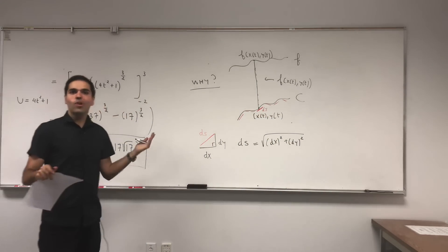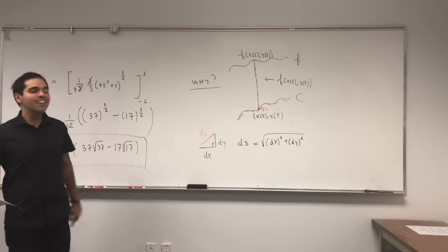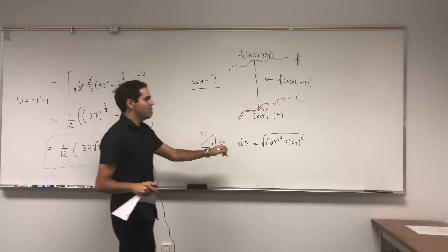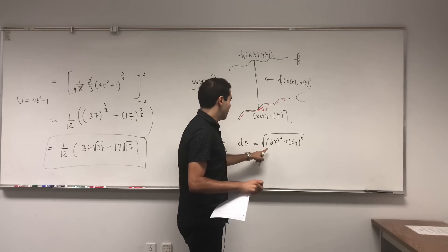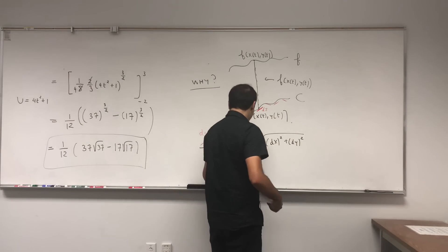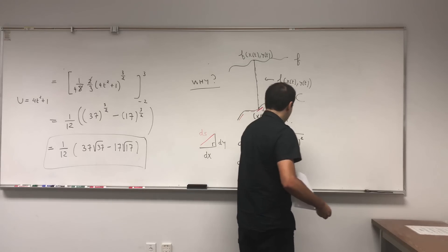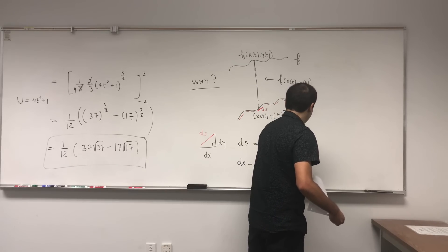So of course, by the Pythagorean theorem, dS is just square root of dx squared plus dy squared. But then the problem is, well, dx and dy, they're functions of t, not functions of x, because we parametrize stuff. But that's not a big problem because we do have chain rule again, because dx is dx over dt times dt, which is x prime of t dt.